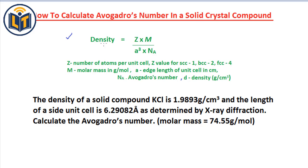The density formula is: density equals z times m divided by a-cubed times N_A. Here, z is the number of atoms per unit cell, m is the molar mass in grams per mole, a-cubed is the volume of the unit cell where a is the edge length measured in centimeters, and N_A is Avogadro's number — which is what we are going to calculate.